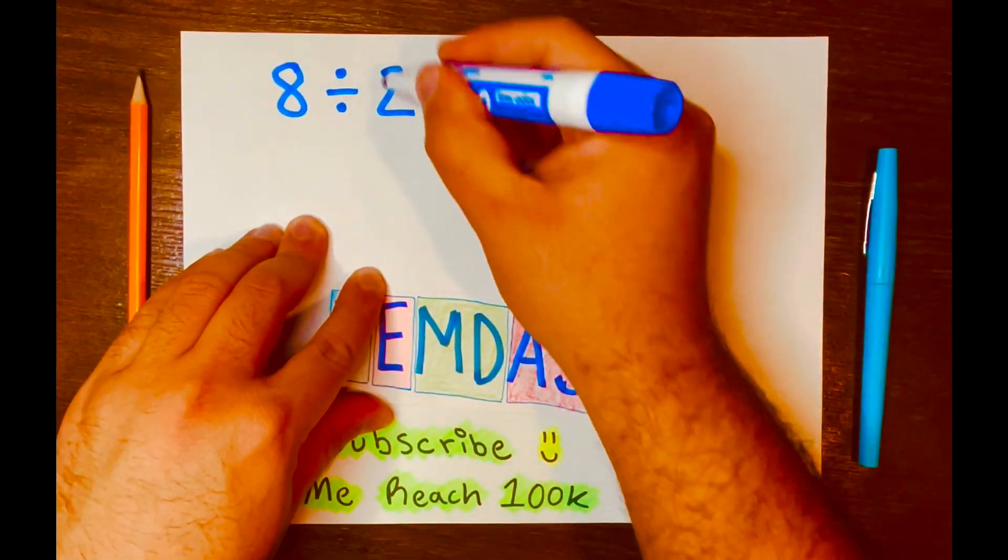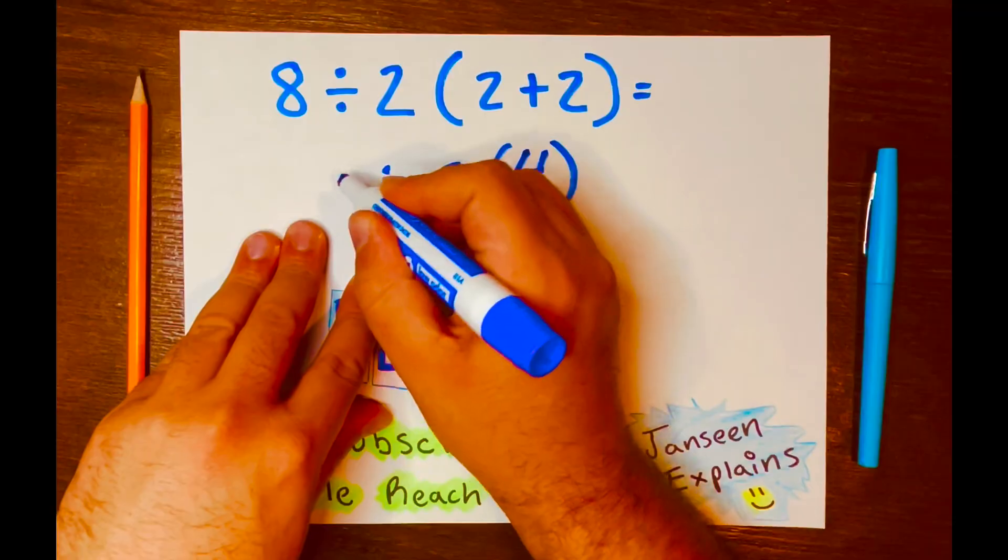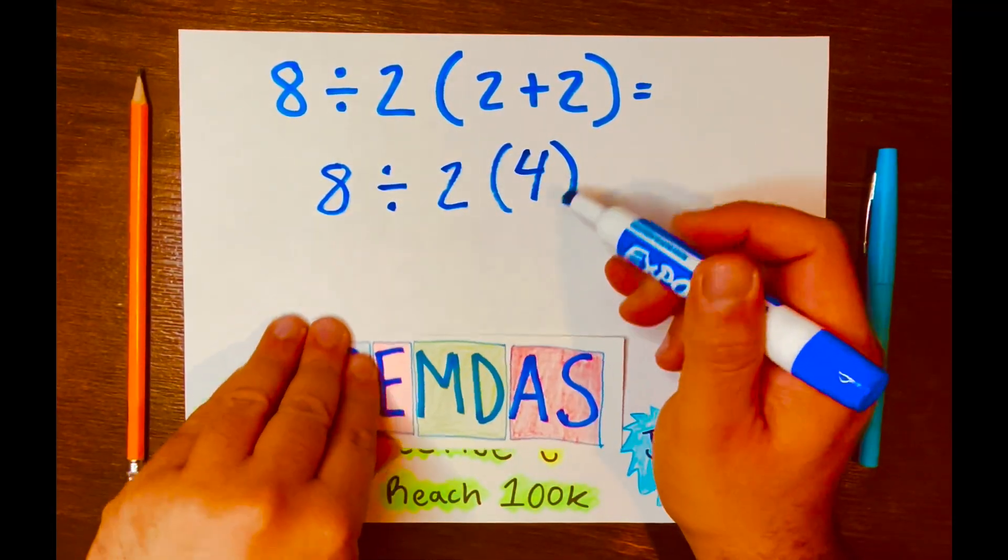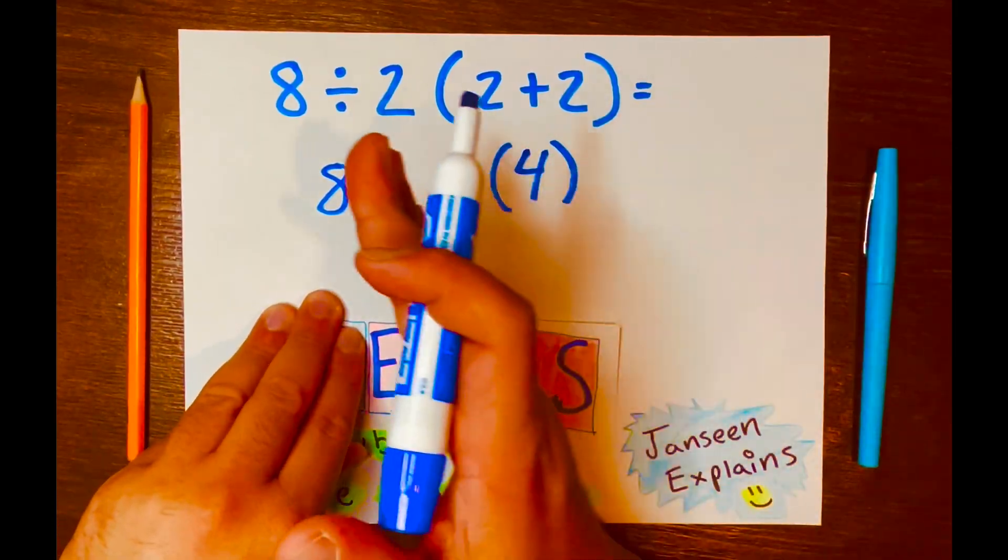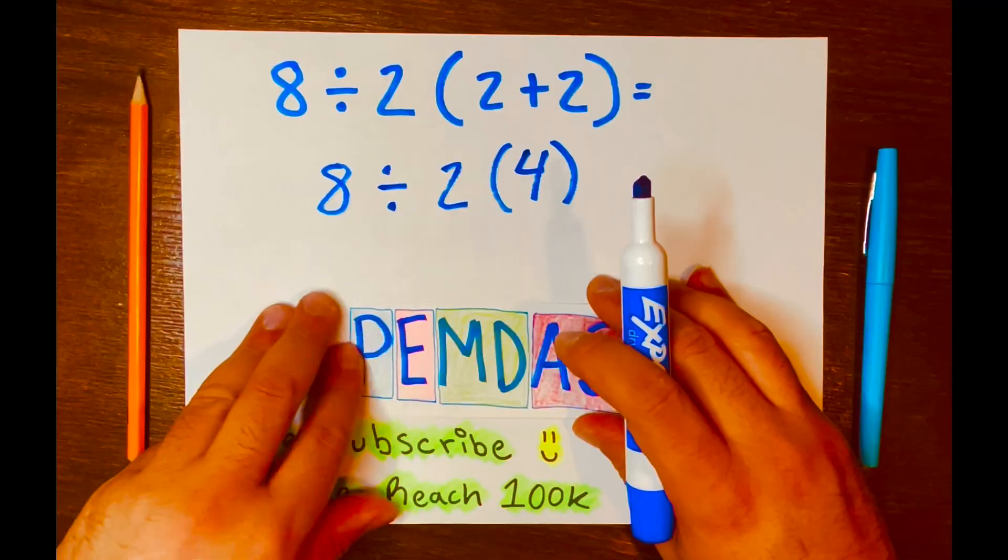Keep the brackets, bring down the 2, bring down the division symbol down, and then the 8 down. Now we have 8 divided by 2 times 4. And we solve the problem from left to right according to the levels in PEMDAS.